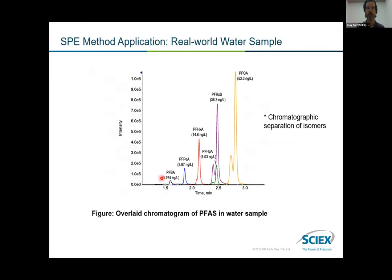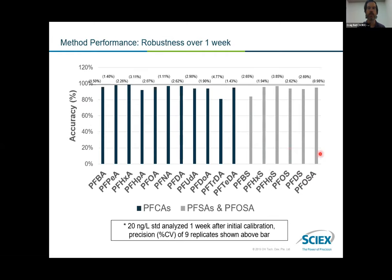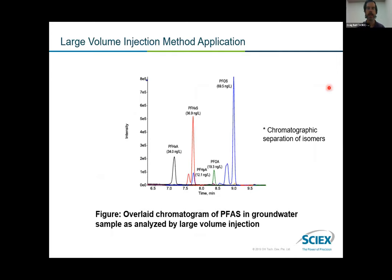Real-world water samples show levels far below what would be needed to meet guidelines. With the sensitivity of instruments like the 5500 Q-Trap, we can also take advantage of sensitivity to do direct injections of water — almost a milliliter — concentrating it on the head of the analytical column. This isn't a true online SPE system but concentrates a large volume onto the analytical column head, with great robustness over long analysis periods, showing levels down to 12 PPT in a groundwater sample.